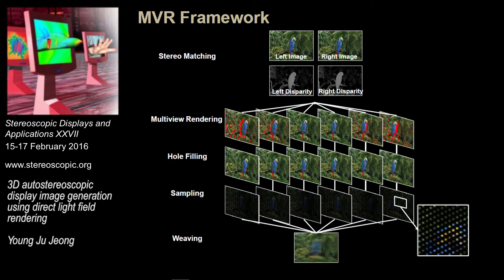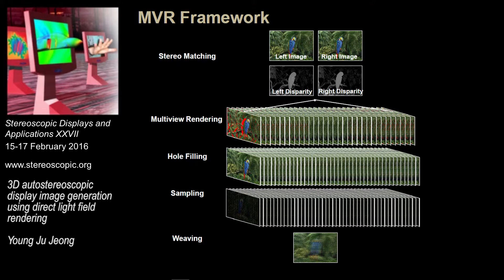This slide shows the framework for the previous approach, which is called multiple viewpoint rendering. From the stereo image, the disparity map is estimated. From the stereo image and disparity map, multi-view images are generated. Since multi-view images can have hole regions disoccluded from the stereo image, we should fill the hole region for each multi-view. Then with the hole-filled multi-view images, we can obtain the final display image. However, if the number of viewpoints increases, there are a large number of multi-view images, large amounts of processing, and large memory requirements.